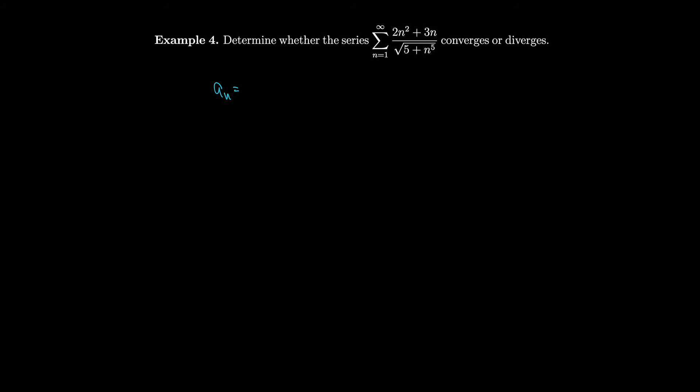Let's take a look at this series now. Notice that we have 2n² in the numerator and n^(5/2) in the denominator, so it looks like we should use a limit comparison test with 2n²/n^(5/2). So let's set a_n = (2n² + 3n) / √(5 + n⁵) and we'll let b_n = 2n² / n^(5/2), which is just 2/n^(1/2). For almost all of these problems we choose a p-series or geometric series for comparison because we already know when those converge and diverge.